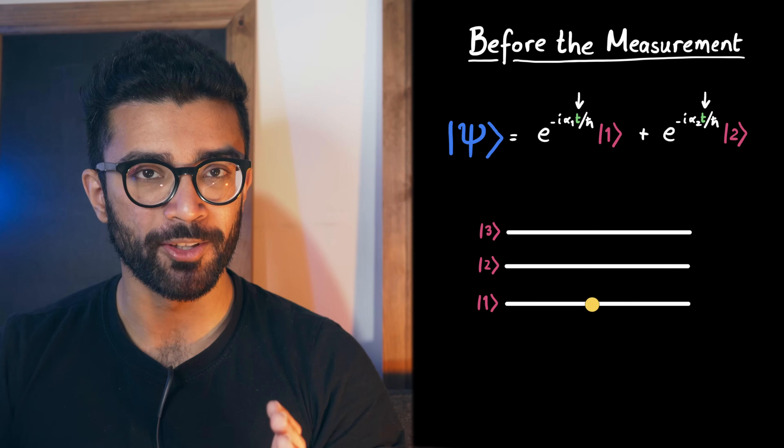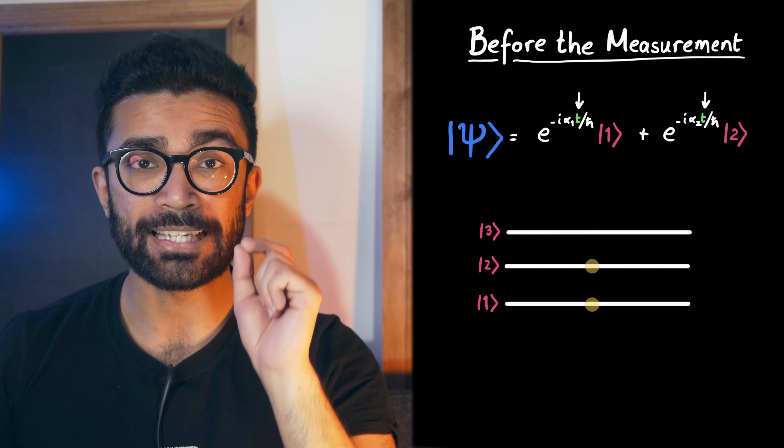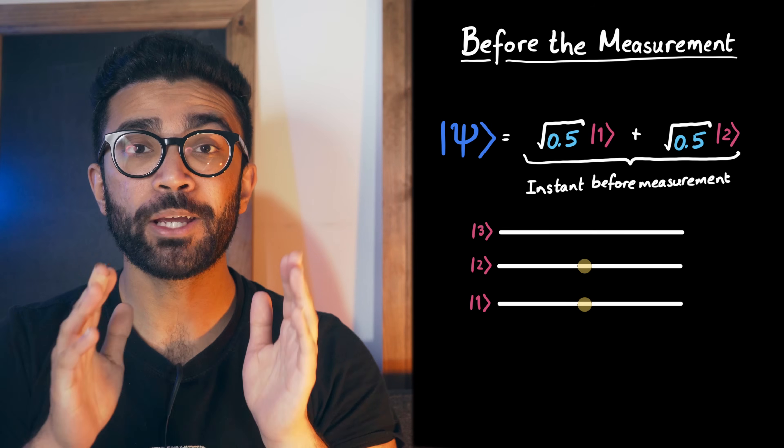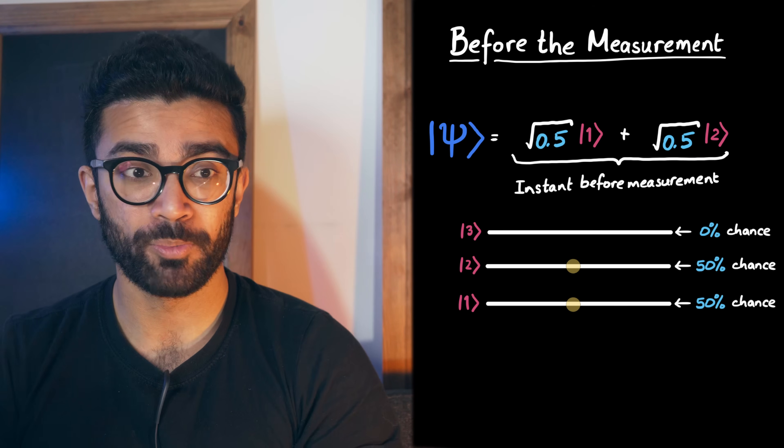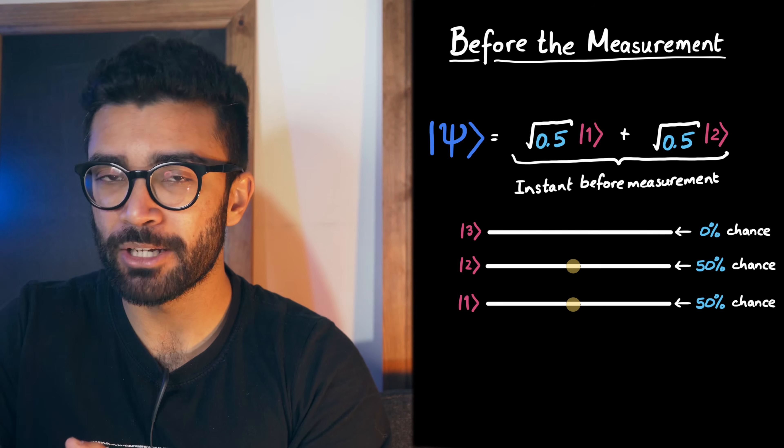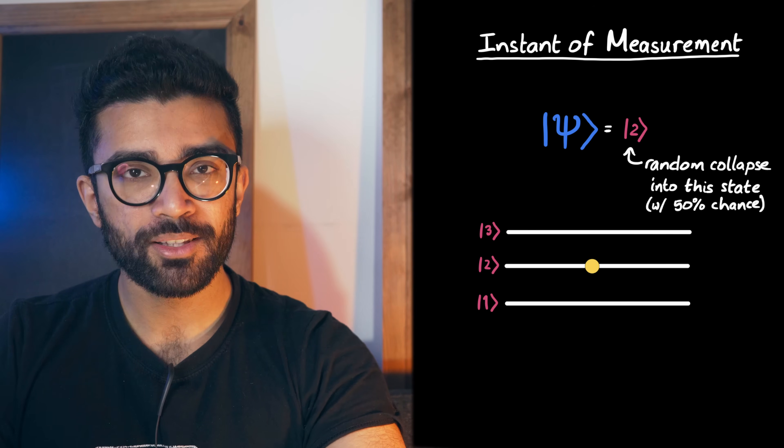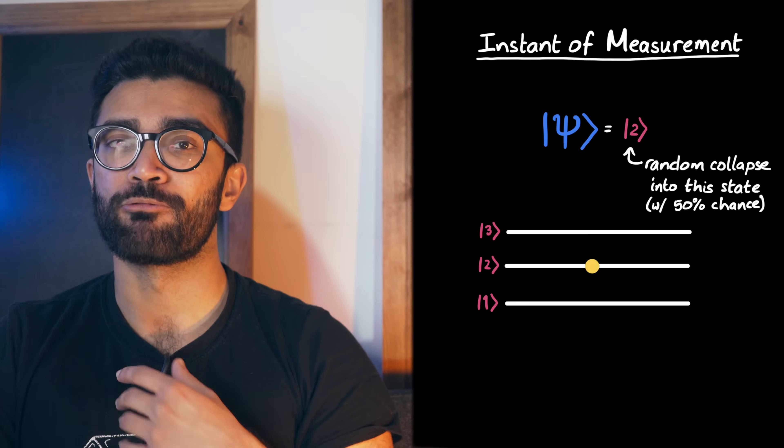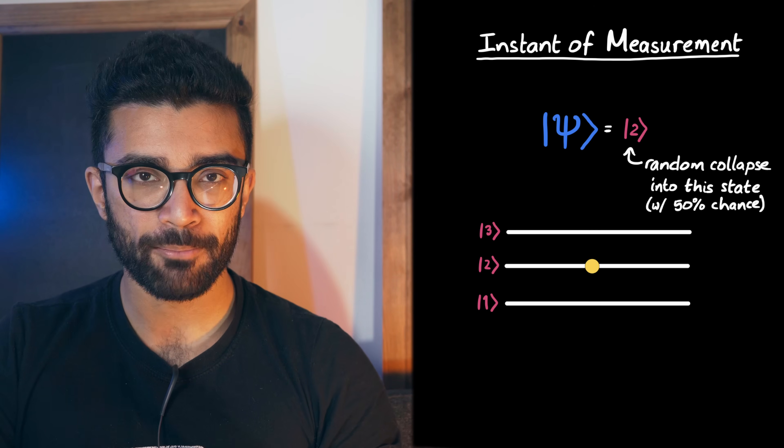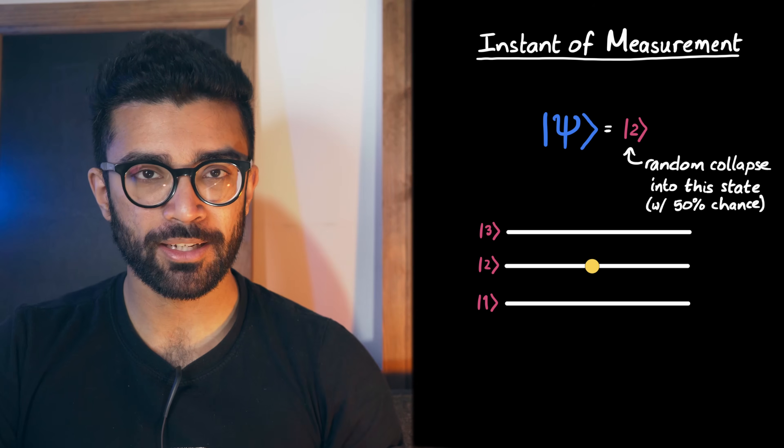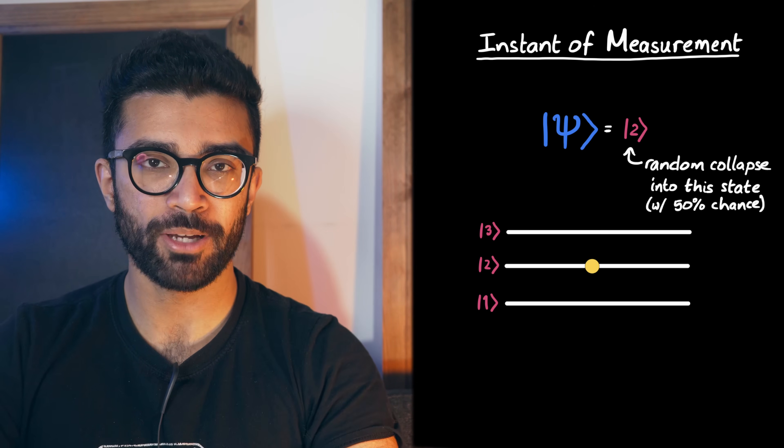What's important though, is that we can look at the wave function as it is at the instant in time just before we make the measurement, and we can use that to calculate the probability of getting any particular measurement result when we do make the measurement. As we've already seen, once the measurement is made, there is a somewhat random and unpredictable collapse into one of the possible measurement states. And this depends on what the wave function looked like just before we made the measurement.